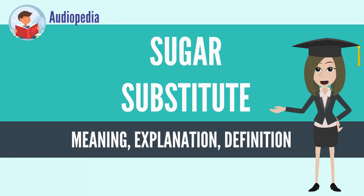Those not produced naturally are, in general, called artificial sweeteners. When sweeteners and sugar substitutes are provided for restaurant customers to add to beverages such as tea and coffee, they are often available in small colored paper packets.